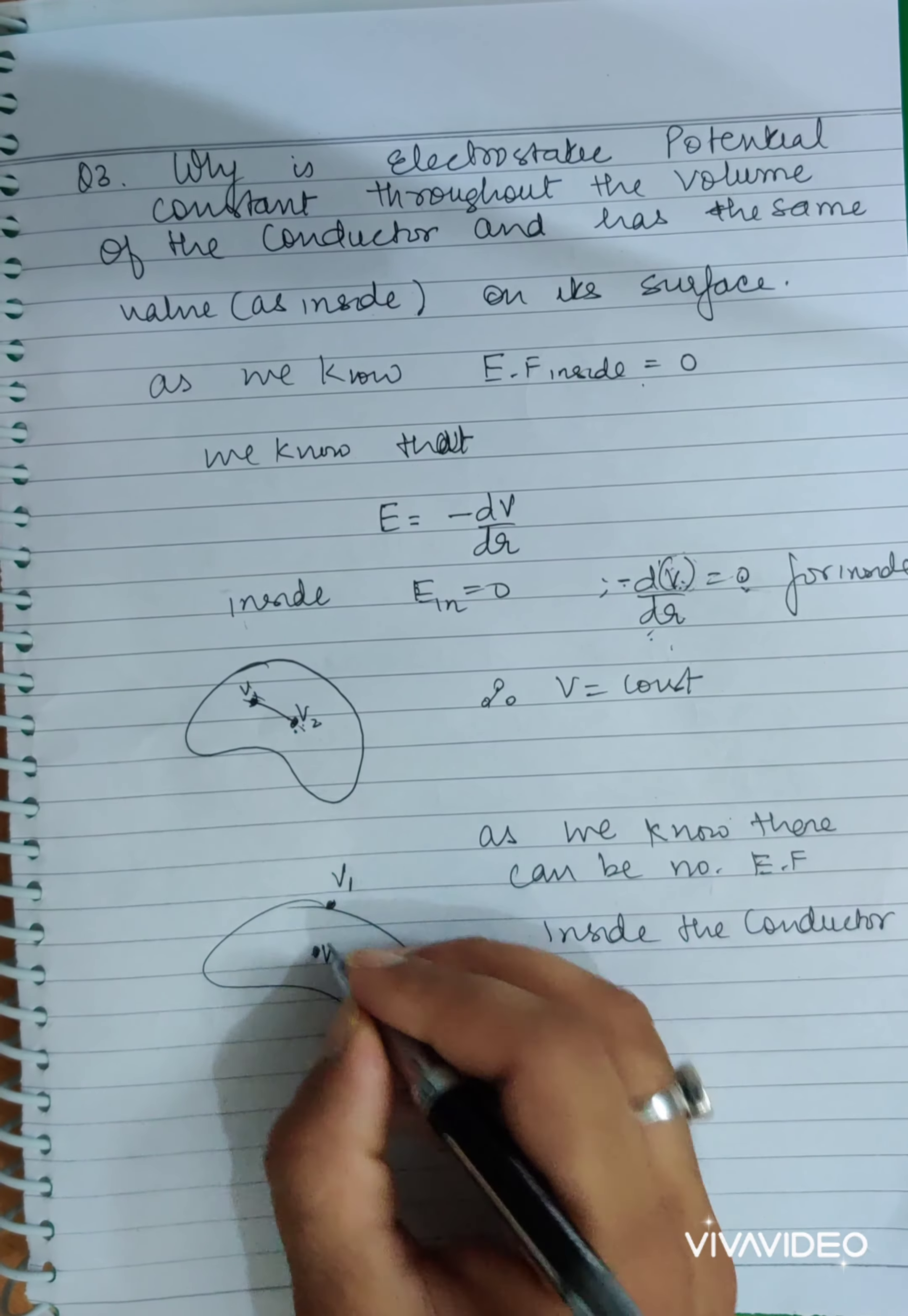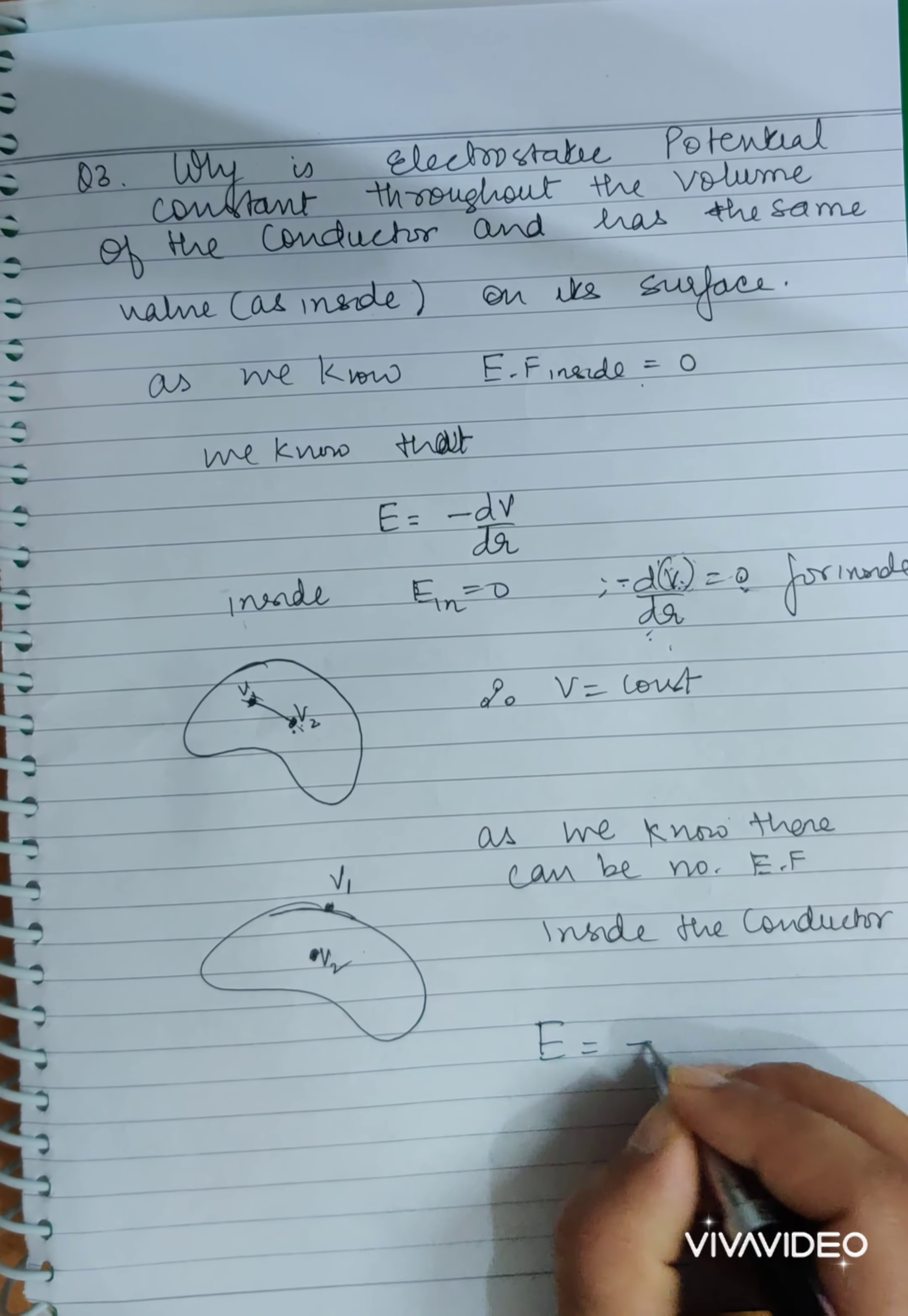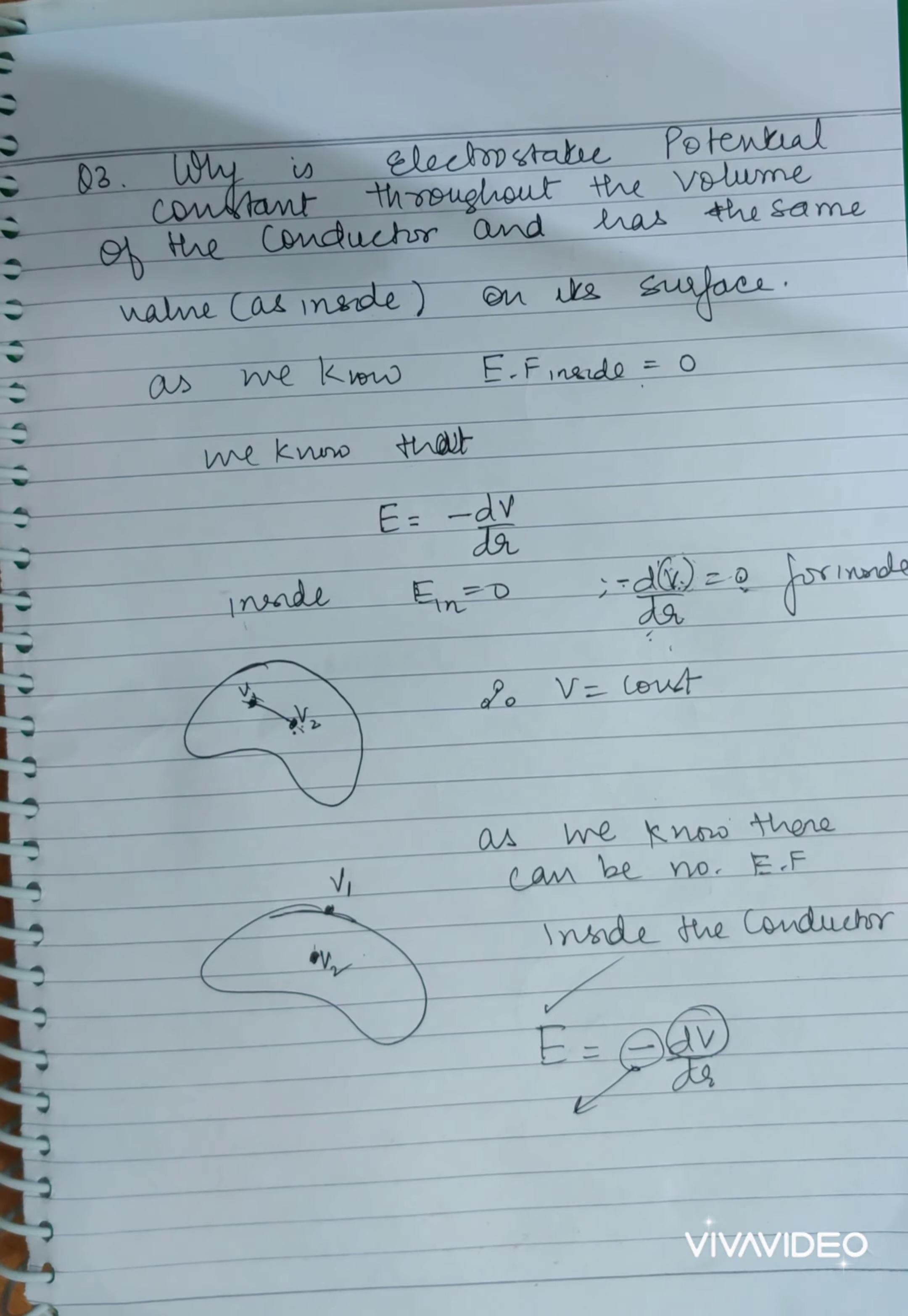So if this potential is different, which is on the surface and which is inside, then electric field will start existing. Because electric field, what is it? Minus dV by dr. If there is dV, if there is a difference, then electric field exists. And this negative sign indicates the direction of electric field.